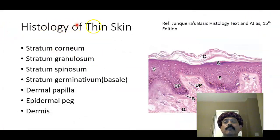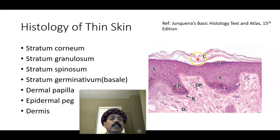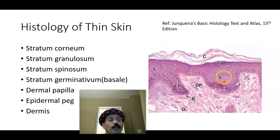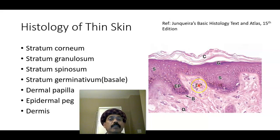This is the histology of the thin skin. It is called thin because the stratum corneum layer is thinner here, and this part of the skin is more vascular and more cellular. In thin skin, the stratum lucidum layer is also missing. Thin skin also has hair follicles, which are not present in thick skin. Thin skin is present all over the body; thick skin is present on the palm of the hand and the sole of the foot.